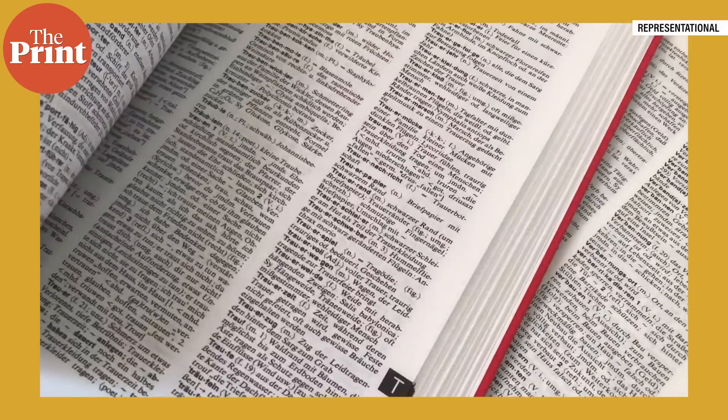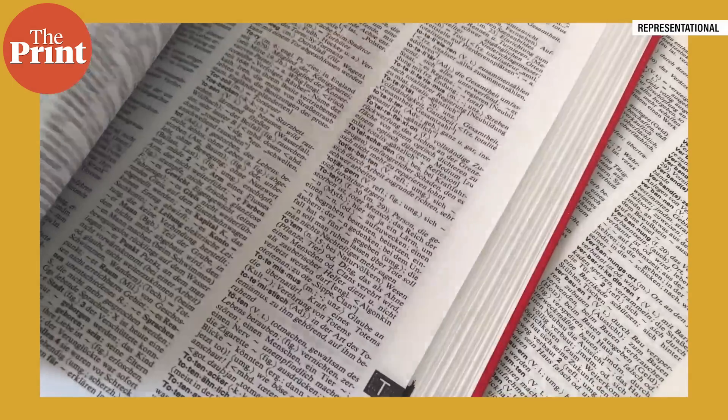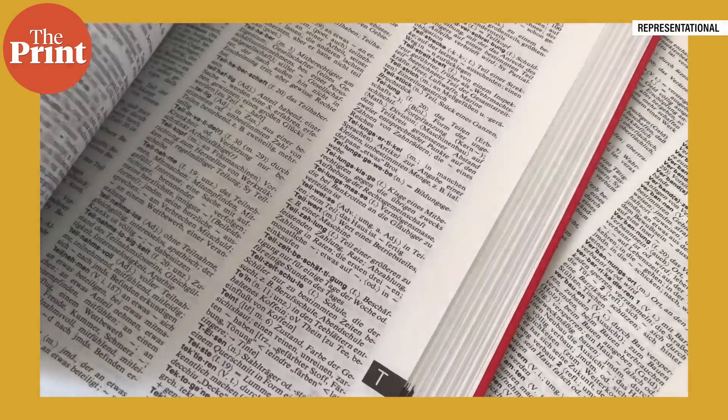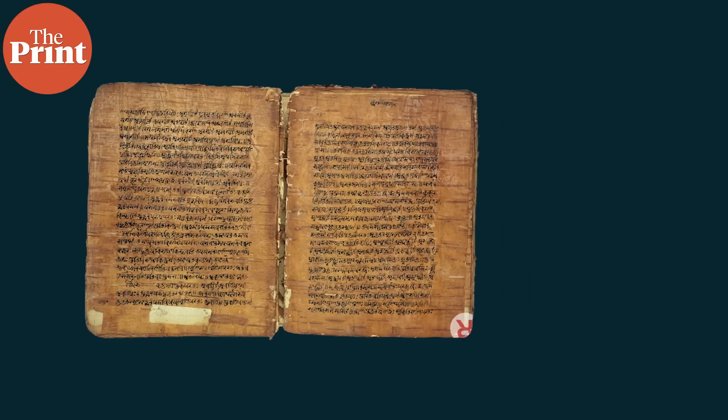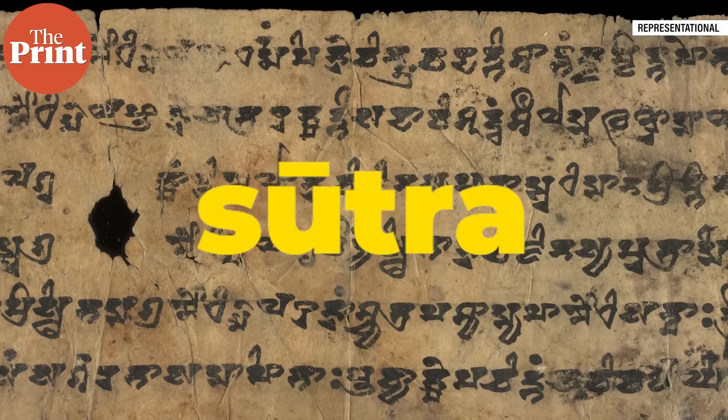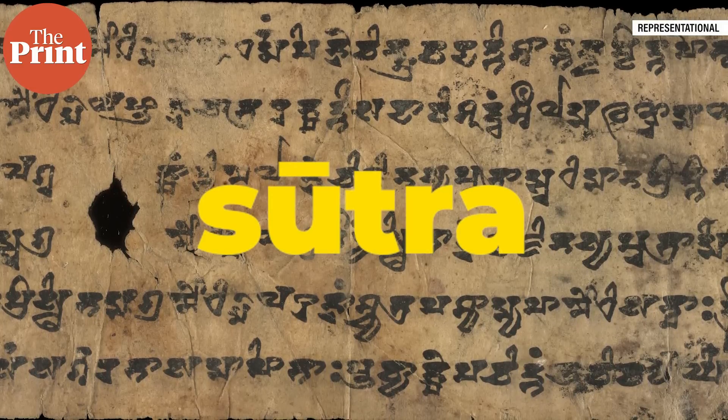These instructions in Ashtadhyayi tell readers how to form new words in Sanskrit and how to create new sentences that are grammatically correct using existing words. But Panini's text is not simple. The book is split into 8 parts — 'Ashtadhyayi' — and these rules are written as sutras, which are concise pieces of instruction whose meaning is not always very obvious or clear.